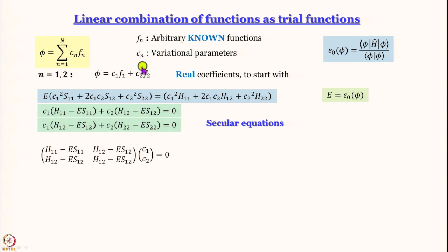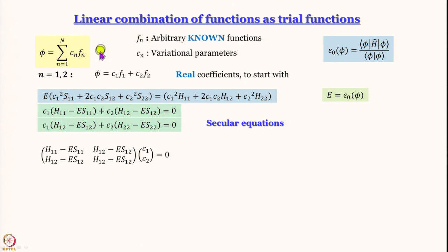By changing c_n we try to get the minimum value of epsilon_0, which provides an upper bound to the ground state energy. We demonstrated this with a simple example where there are only two terms in the summation: phi equals c_1 f_1 plus c_2 f_2.